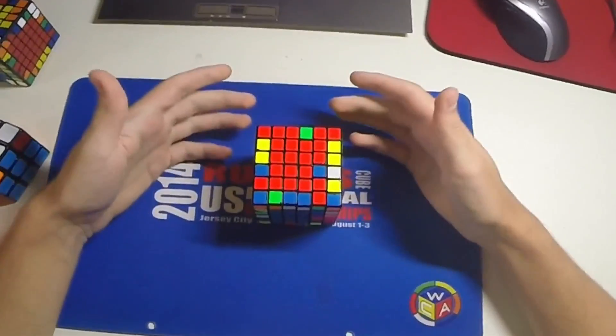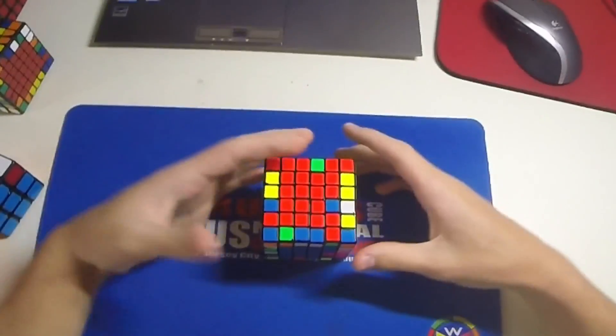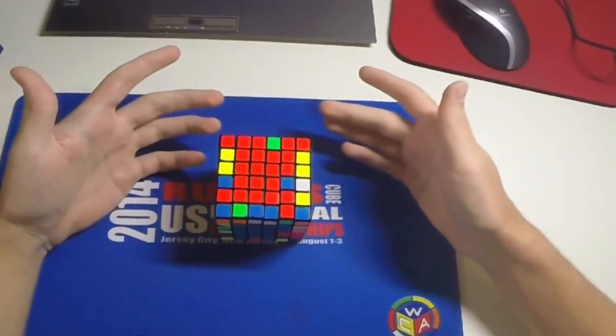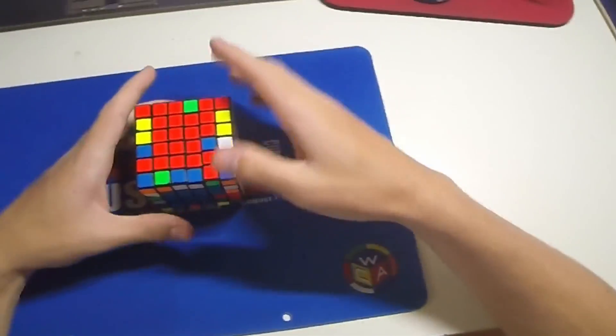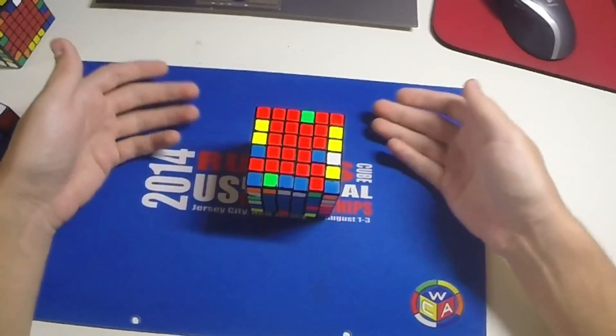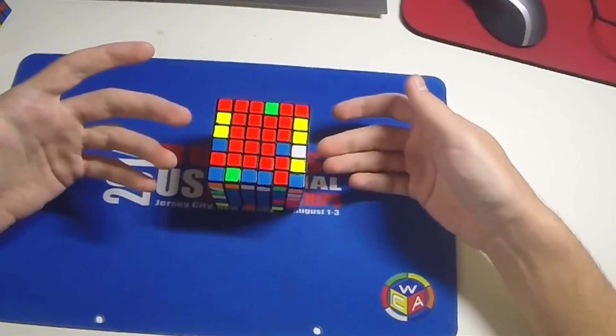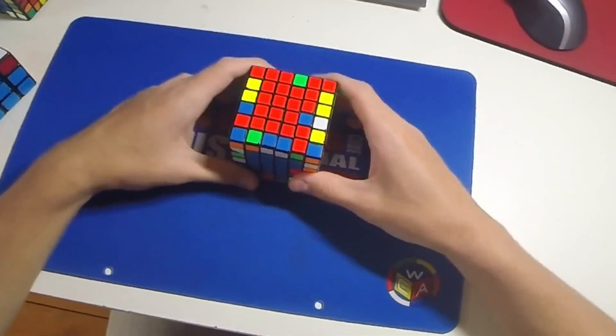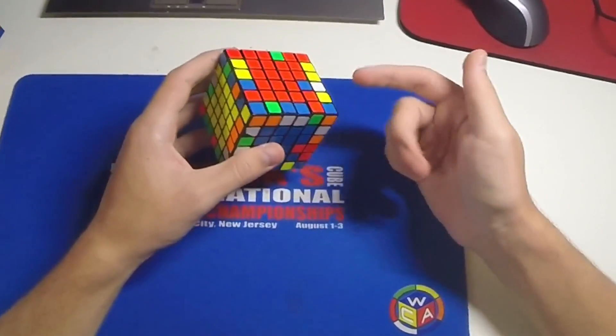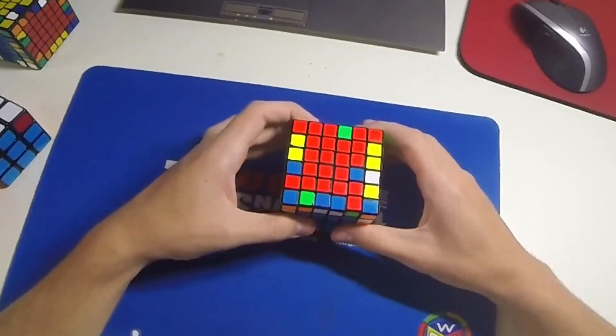This is going to be a slightly longer and more advanced video. It's not going to be a walkthrough solve. I'm not going to explain everything I do, just go through my thought process for big cube edges. I picked 6x6 because it's a good middle ground between the 5x5 and 7x7.